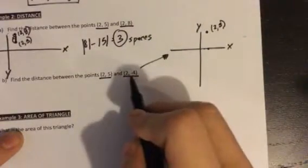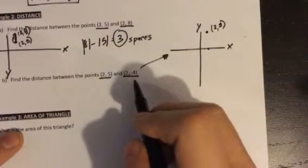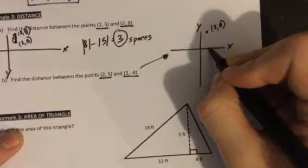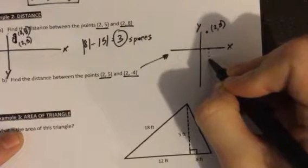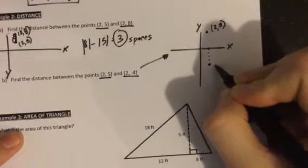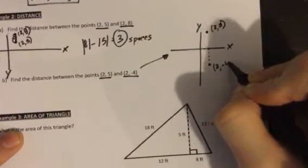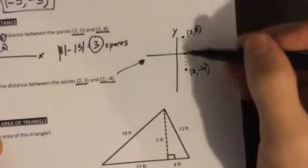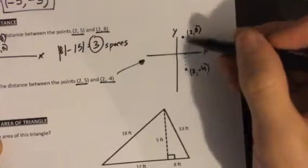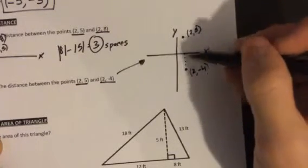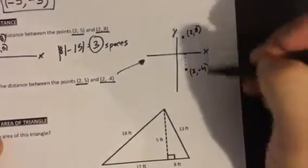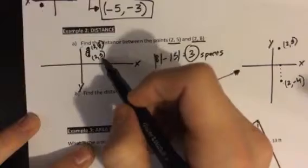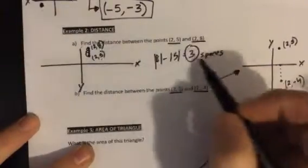All right, and then this point is (2, -4). So I'm going over two and then down one, two, three, four. Now you'll see these are on opposite sides. They're on different sides of my x-axis. So I can't just subtract these two values, right? Here on the first example, I get to subtract eight and five because they're on the same side and I got three.